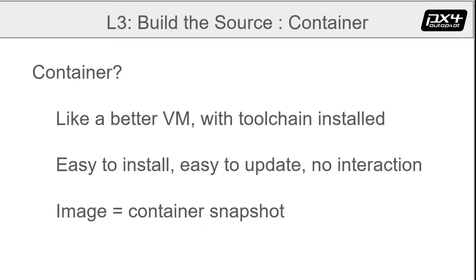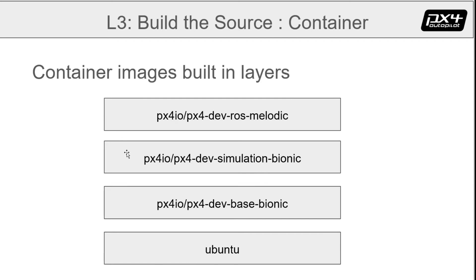Their use is recommended. Now a word about nomenclature. Containers are stored in images — you don't download or store containers, you download or store images. When you run an image, it becomes a container. One important thing: containers build upon other containers. Each layer contains all aspects of the parent layers. An important part of working with containers is figuring out which one you want to use. For example, the PX4Dev ROS Melodic container adds ROS to PX4Dev simulation bionic, which adds simulation to PX4Dev base bionic, which adds a toolchain to the Ubuntu image.